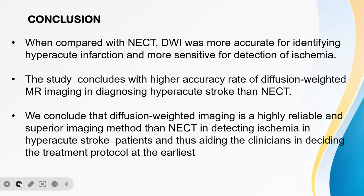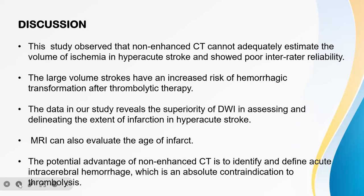We conclude that diffusion-weighted imaging is a highly reliable and superior imaging method compared to non-enhanced CT in detecting ischemia in hyperacute stroke patients, thus aiding the clinician in deciding on a treatment protocol at the earliest. This study also observed that non-enhanced CT cannot adequately estimate the volume of ischemia in hyperacute stroke and showed poor inter-rater reliability.